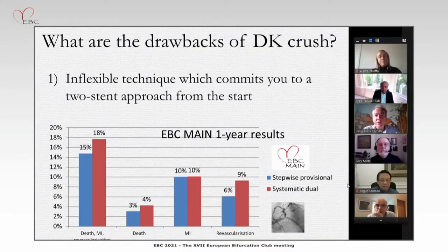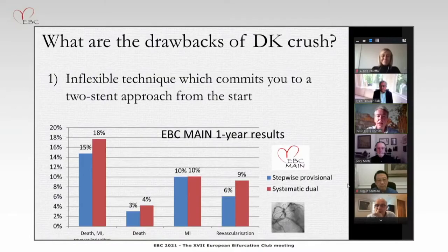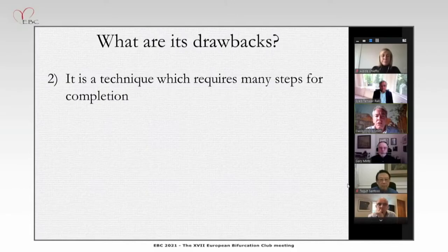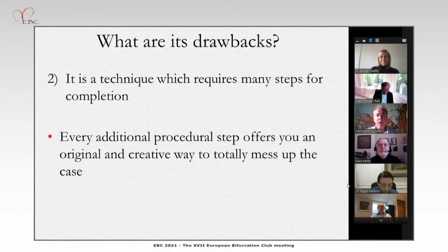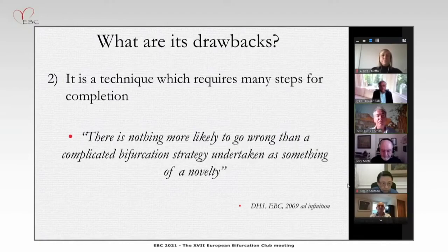DK Crush's biggest drawback is its inflexibility — it commits you to two stents from the start, which is not supported by the whole body of data now accumulated, with ABC Main showing a very neutral result for European patients. DK Crush requires at least 10 steps for completion, and every additional procedural step offers an innovative way to completely mess up the case. There is nothing more likely to go wrong than a complicated bifurcation strategy performed as a novelty.